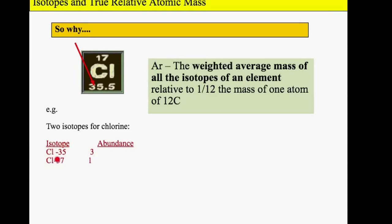You might think the average of 35 and 37 is 36. So why is the relative atomic mass 35.5? Why is it not 36?